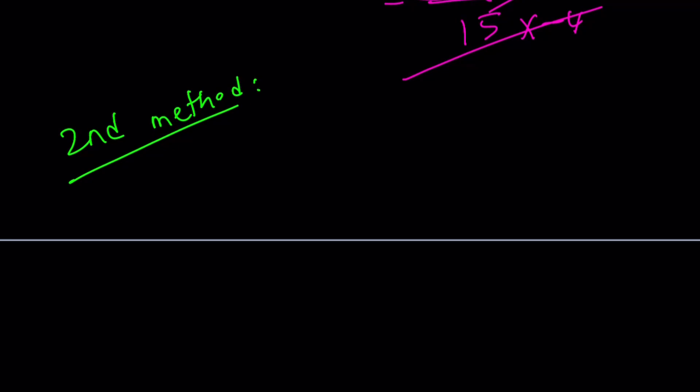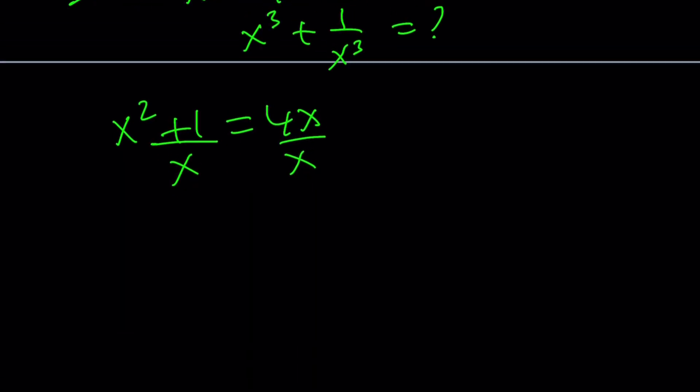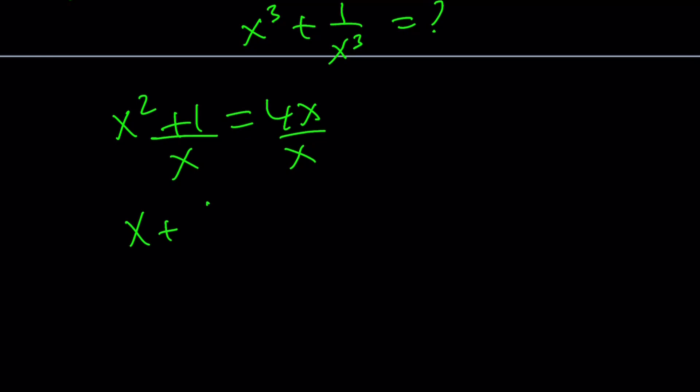So for my second method, one more time, I'm going to rewrite the original equation. And I'm supposed to evaluate x cubed plus 1 over x cubed. I want to isolate this time the 4x, and then divide both sides by x. Obviously, x does not equal 0. This gives me x plus 1 over x equals 4. Isn't that awesome?